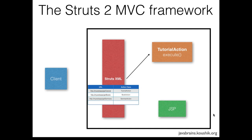An execute method could pass control to a JSP. Say you have a JSP called show tutorials dot JSP. The execute method should tell the struts framework to pass control to that show tutorials dot JSP. But that's not ideal because if you change the name of the JSP, you'd have to go to this method, change the name, and rebuild and redeploy the entire application. So ideally this should be a configuration item — we can have an additional column in struts XML which does the mapping: URL to action class to JSP.